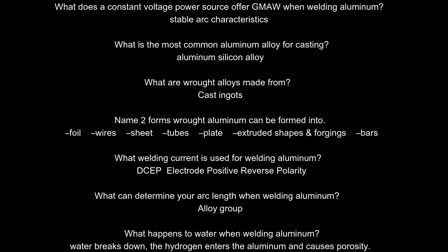What is the most common aluminum alloy for casting? Aluminum silicon alloy. What are rod alloys made from? Cast ingots. Name two forms rod aluminum can be formed into. Foil, wires, sheet, tubes, plate, extruded shapes, forgings, bars. What welding current is used for welding aluminum? DCEP — electrode positive, reverse polarity.